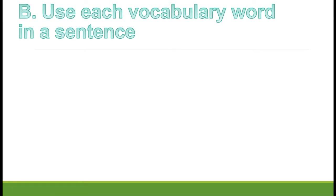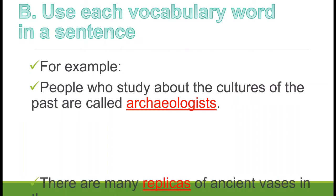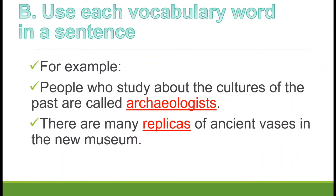For letter B, use each vocabulary word in a sentence. You know this — we've been doing it in class. For example, for 'archaeologists': 'People who study about the cultures of the past are called archaeologists.' For 'replicas': 'There are many replicas of ancient vases in the new museum.' Numbers one and two are done — you can answer the rest on your own.